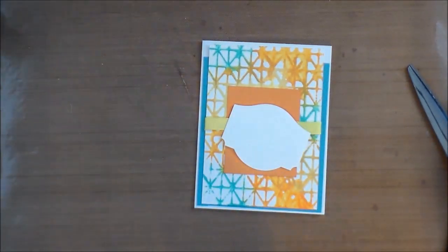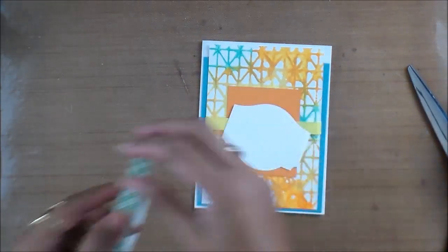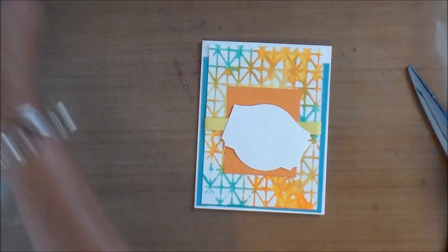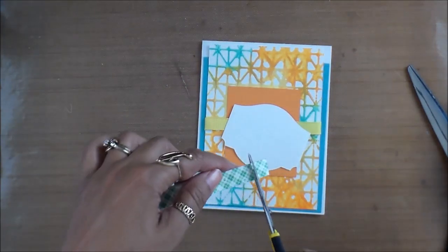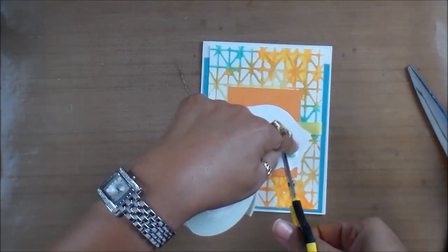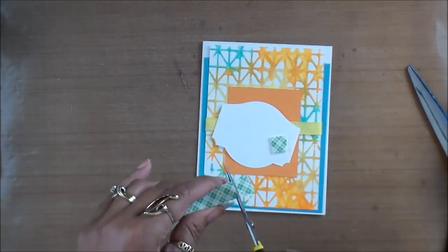I'm going to grab some of my dimensional tape and my other pair of scissors because I will not cut that with my ribbon scissors. Just going to cut off a few of those and lay them on the back. I really always like to put dimension to my cards, so I use foam tape or pop-up dots a lot.